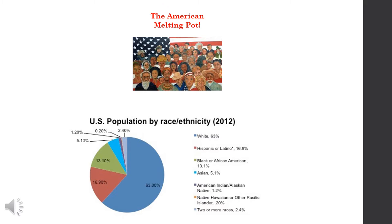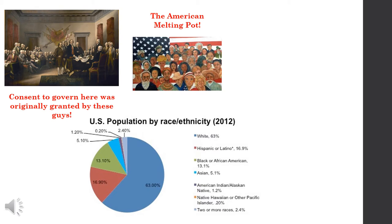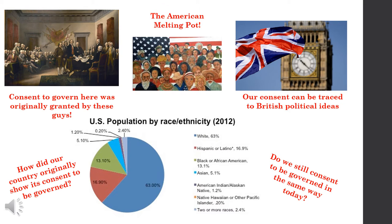But here's the thing: nobody living today originally consented to the government we live under. Instead, consent to govern here was originally granted by these guys, and these guys do not look like the pie chart from 2012. Our consent can be traced to British political ideas, and today not many people rely on British political ideas when making decisions about our government. So we have to ask ourselves, how did our country originally show its consent to be governed? And more importantly, do we still consent to be governed in the same way today?